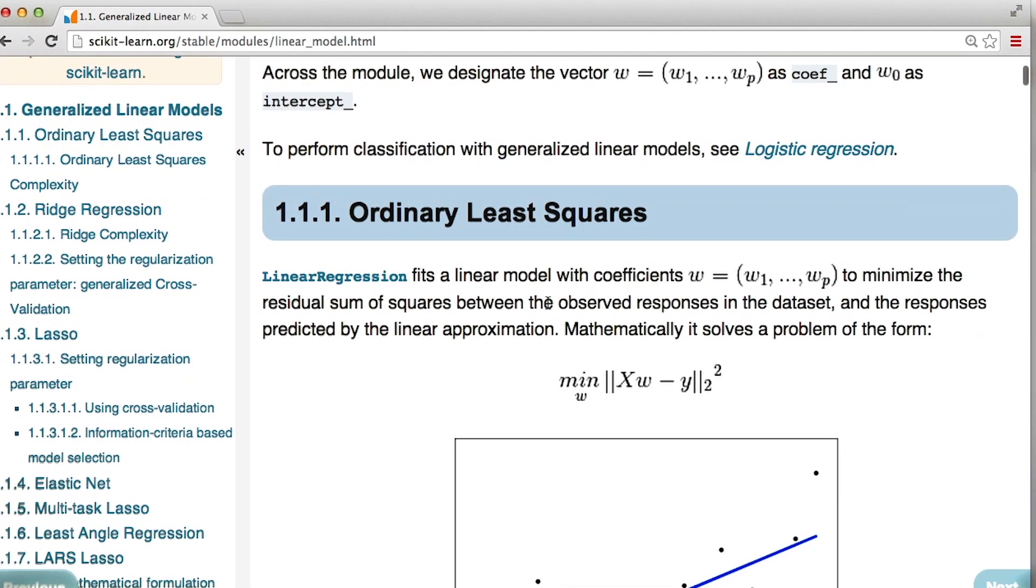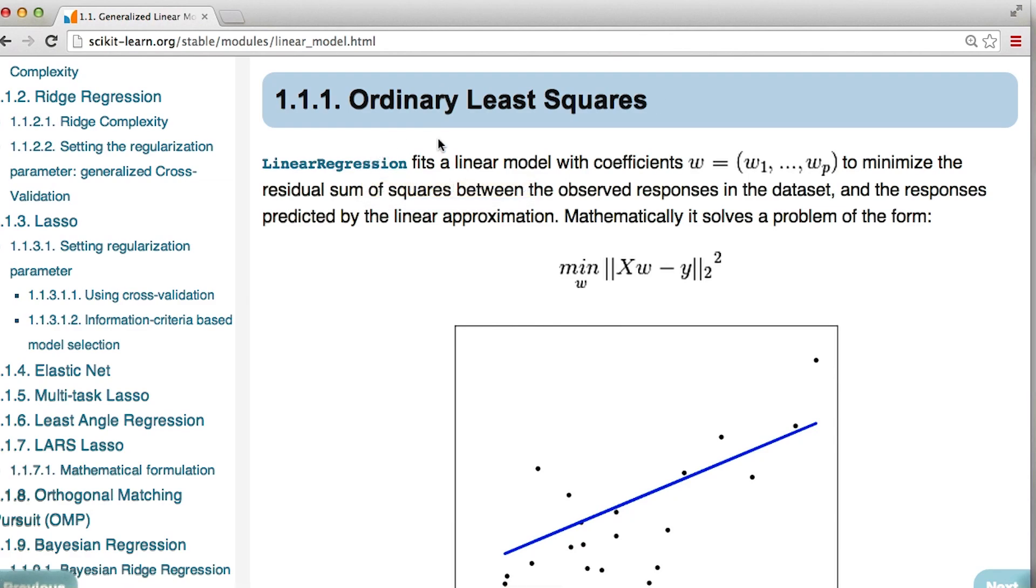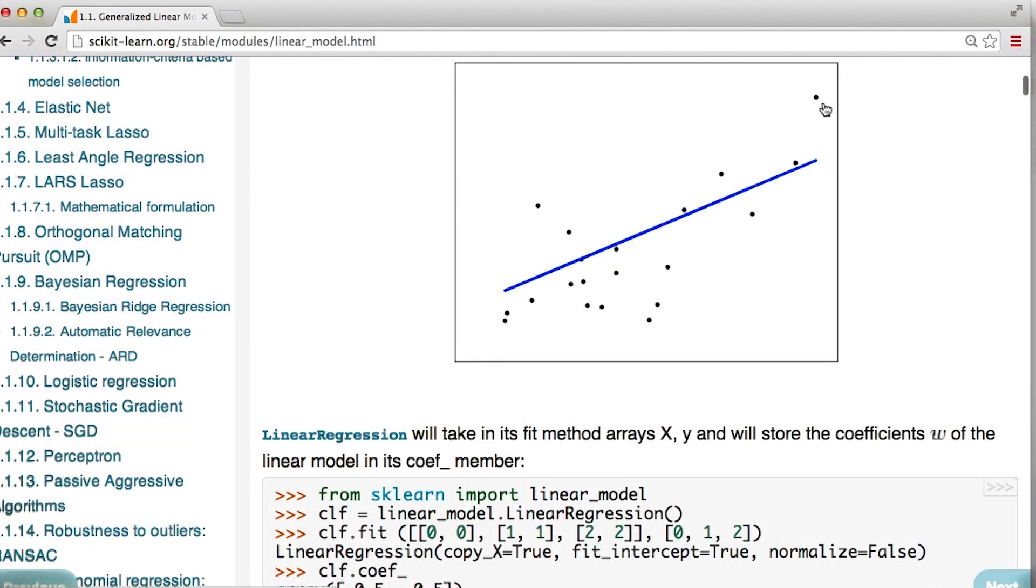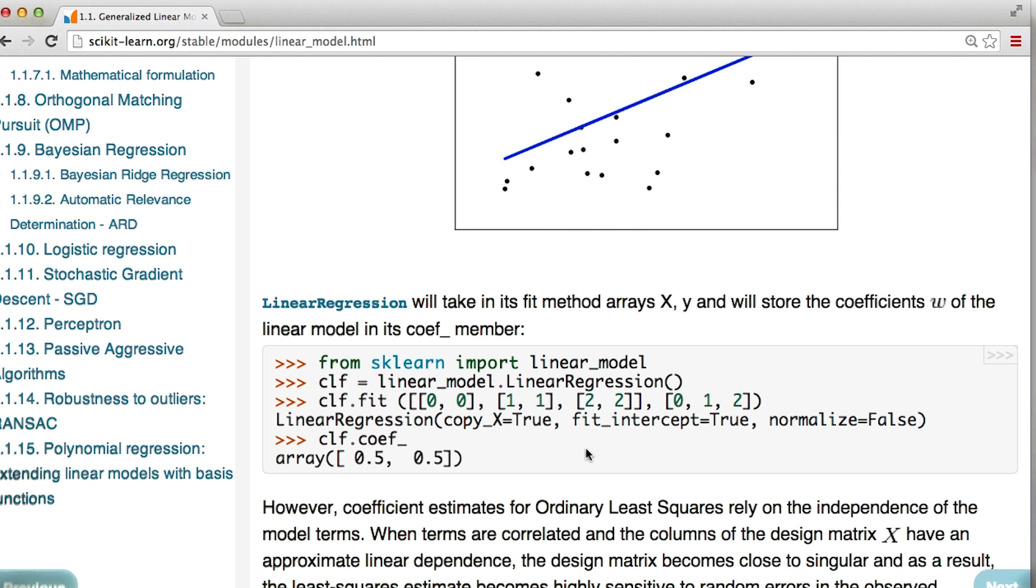Scrolling down a little bit, I see something called ordinary least squares. The exact name for the code is linear regression. And this looks like exactly what I want. I have a variety of points, I'm fitting them with a line, and maybe even better, I have some example code that can get me started.